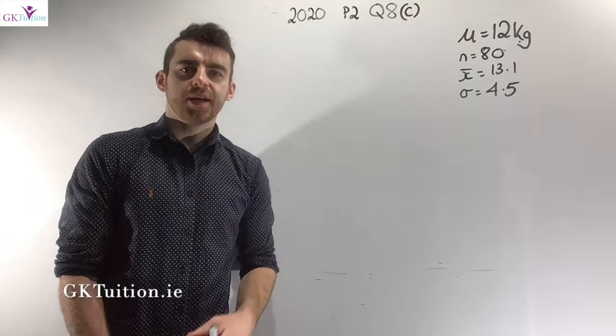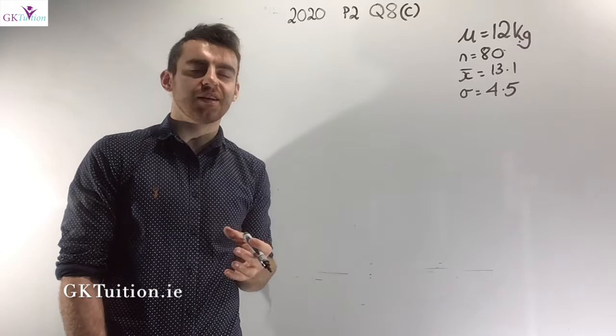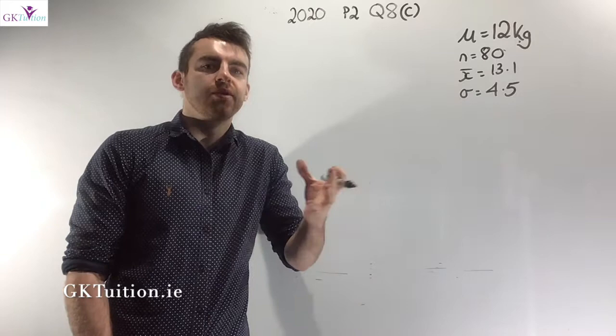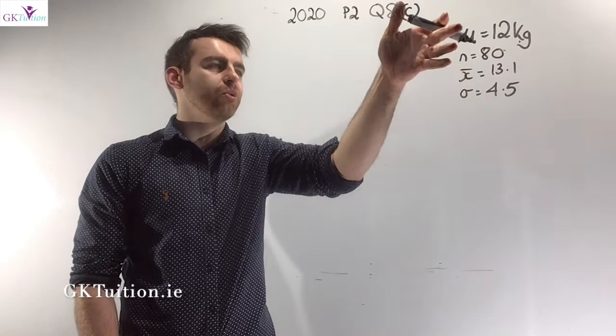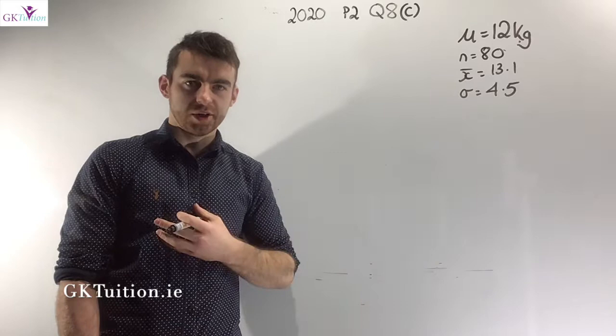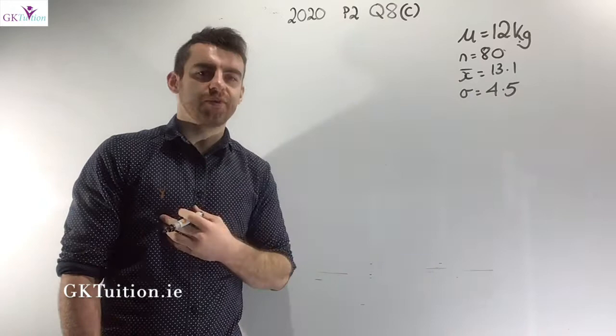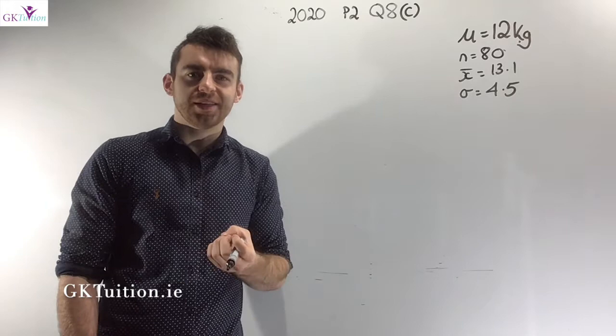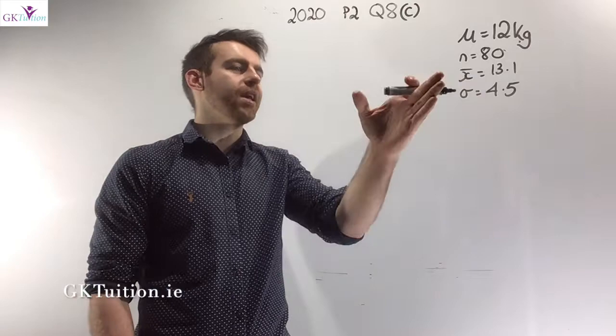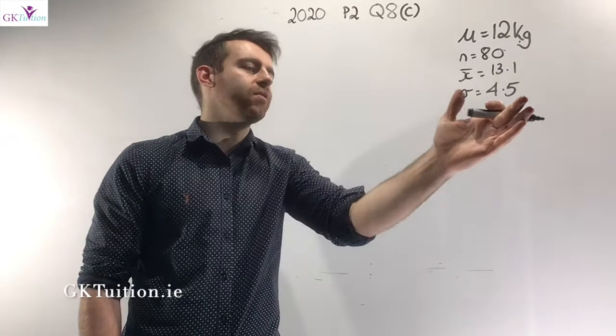In part C, the average weight of carry-on luggage for the airline is 12 kilos — that's the population mean mu. The airline introduces a fee for non-carry-on luggage, so people are expected to load more carry-on. They survey 80 people (n = 80) and find a sample mean of 13.1 kilos with standard deviation 4.5 kilos.